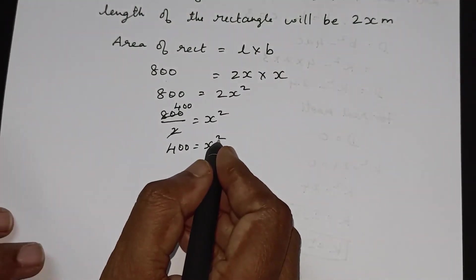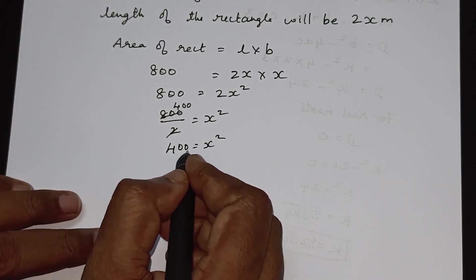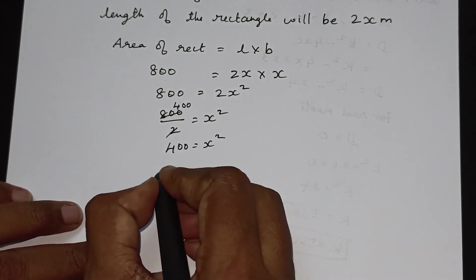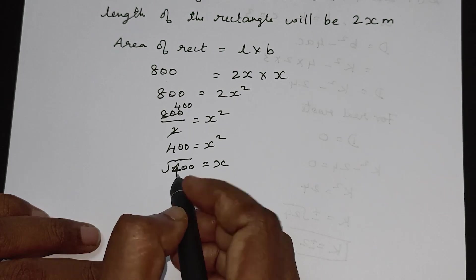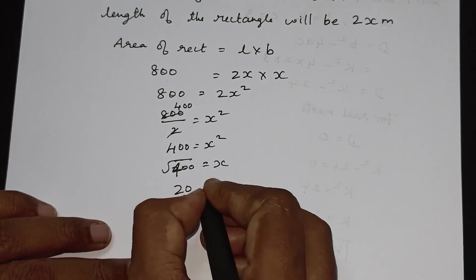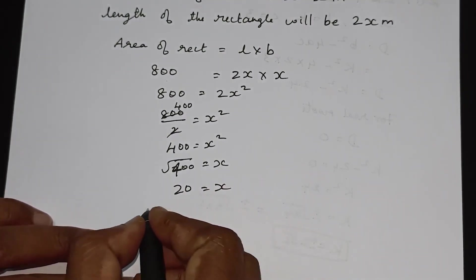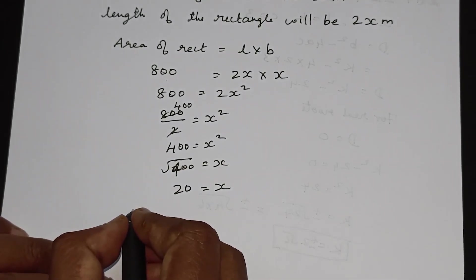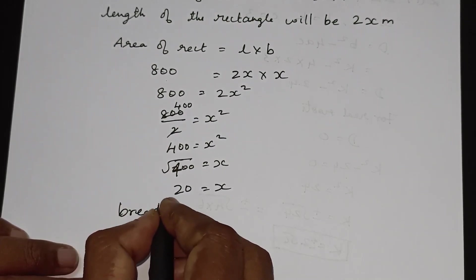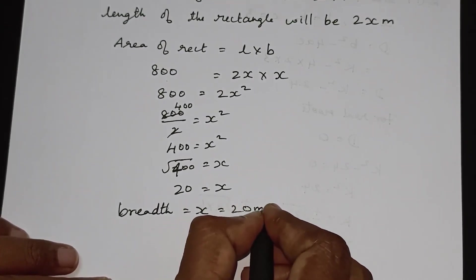We need to find the square root of 400. The square root of 400 is 20, so x is equal to 20.